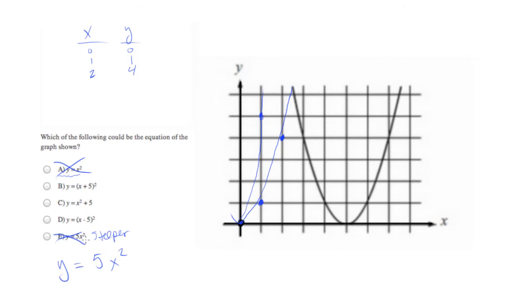We actually don't want to make it steeper. So there should be nothing multiplied. And you'll see in choices B, C, and D, nothing is multiplied.